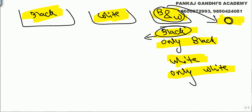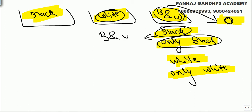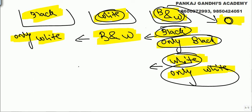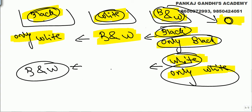If the ball drawn is black, this box is 'only black.' The label 'white' is a wrong label, so that box is not white. The label 'black' is also wrong, so that box is not only black — it must be 'black and white.' That makes the remaining box 'only white.' If instead the drawn ball is white, this box is 'only white.' The box labeled 'black' then becomes 'black and white,' and the remaining box is 'only black.' So we only need to open the box labeled 'black and white.'